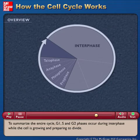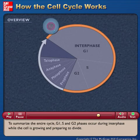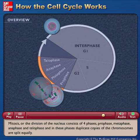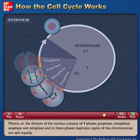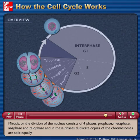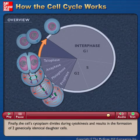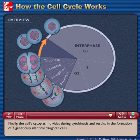To summarize the entire cycle: G1, S, and G2 phases occur during interphase while the cell is growing and preparing to divide. Mitosis, or the division of the nucleus, consists of four phases — prophase, metaphase, anaphase, and telophase — in which duplicate copies of the chromosomes are split equally. Finally, the cell's cytoplasm divides during cytokinesis and results in the formation of two genetically identical daughter cells.